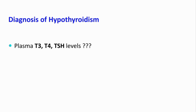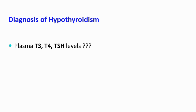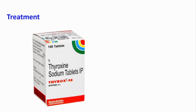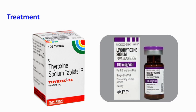Diagnosis of hypothyroidism is easy by clinical features and history. In diagnostic hormone tests, plasma T3 and T4 levels will be low, and TSH level will be high because there is no negative feedback inhibition of TSH when T3 and T4 levels are low. BMR is less than normal, ranging between minus 30 to minus 50. Treatment of hypothyroidism is tablet thyroxine given orally; in severe or emergency cases injection thyroxine can also be given.